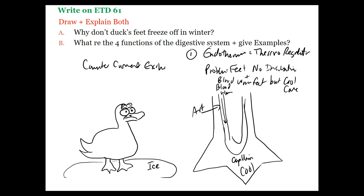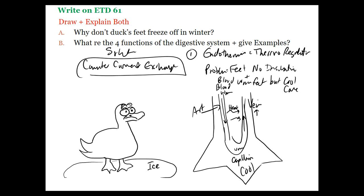In counter-current exchange, blood flows warm from the heart down through the arteries, but running right next to it in the opposite direction are the veins carrying blood back to the heart. The heat from the arterial blood transfers to the cooler venous blood. So the blood reaching the feet is warmish — not hot — which warms the feet enough so they don't freeze, but doesn't drain all the core's heat. It's a way of saving heat. We see this in our own extremities — arteries and veins run counter-current in our arms and legs.